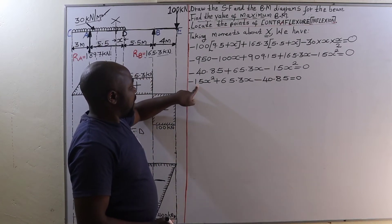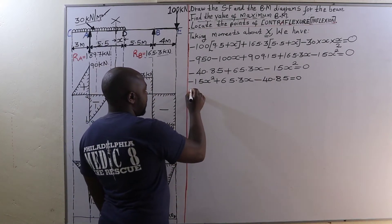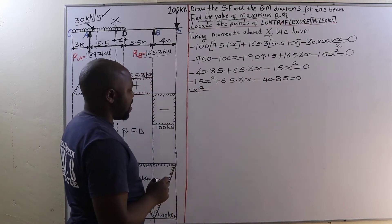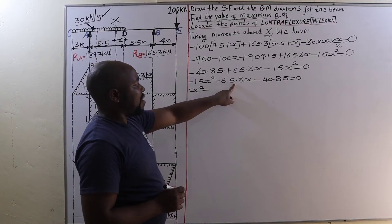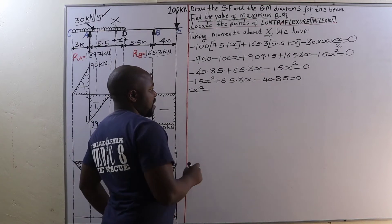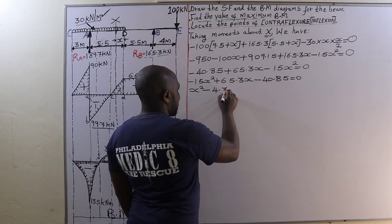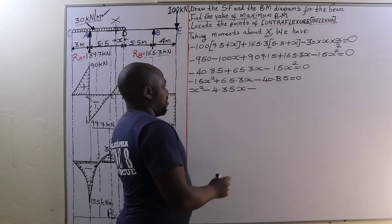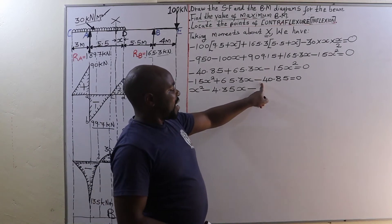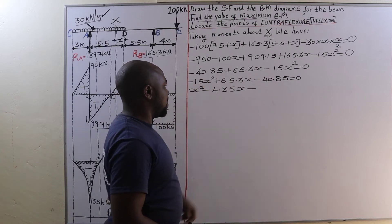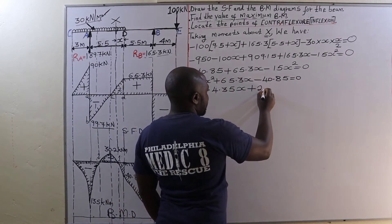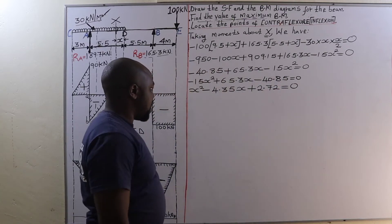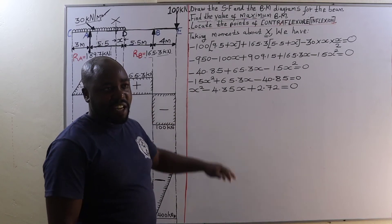Dividing through by negative 15, we get: x² − 4.35x + 2.72 = 0. To find the value of x we can now apply the quadratic formula.